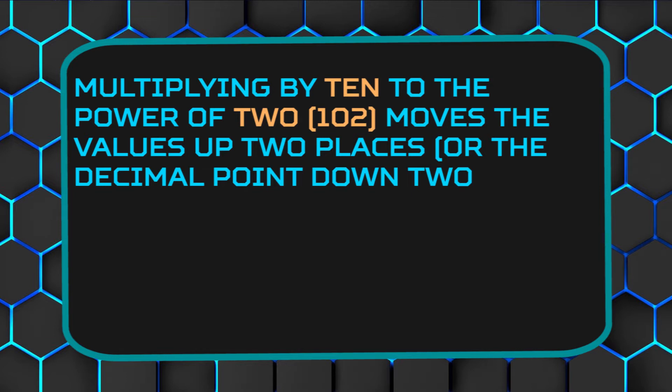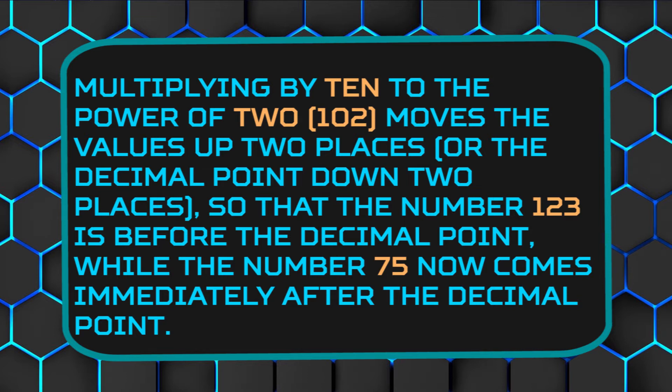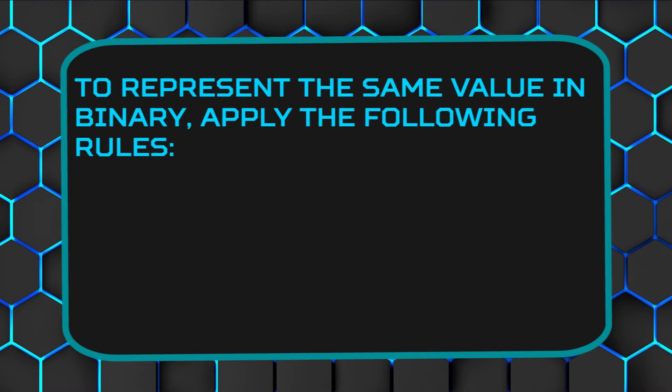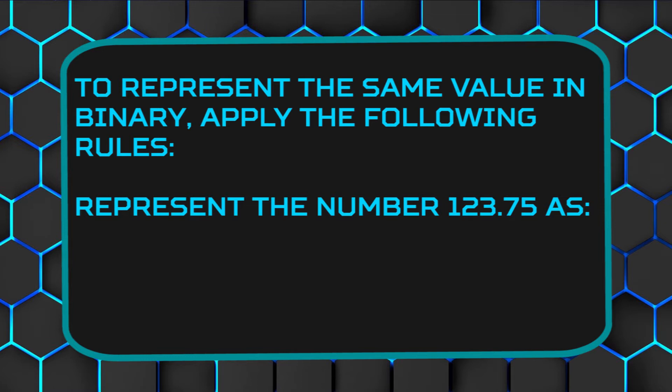Multiplying by 10 to the power of 2, which is 10², moves the value up two places, or the decimal point down two places, so that the number 123 is before the decimal point while the number 75 comes immediately after the decimal point. In this example, the mantissa is 1.2375 and the exponent is 2. Generally, you can think of this as M×10^E. To represent this same value in binary, apply the following rules. Represent the number 123.75 as its binary form.